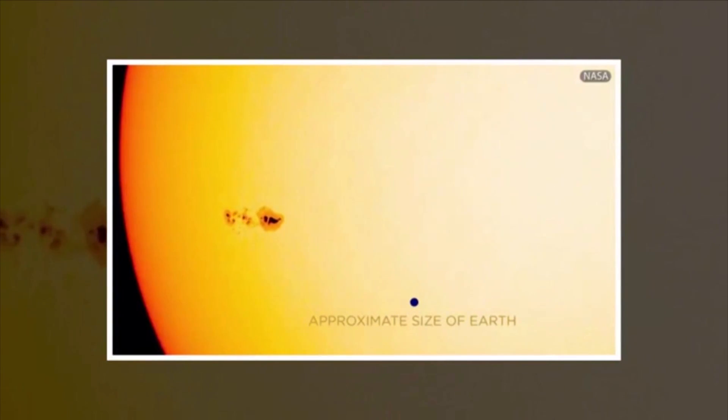Sunspots are darker, cooler areas on the surface of the Sun, caused by interactions with the Sun's magnetic field. They tend to appear in regions of intense magnetic activity, and when that energy is released, solar flares and huge storms erupt from sunspots.